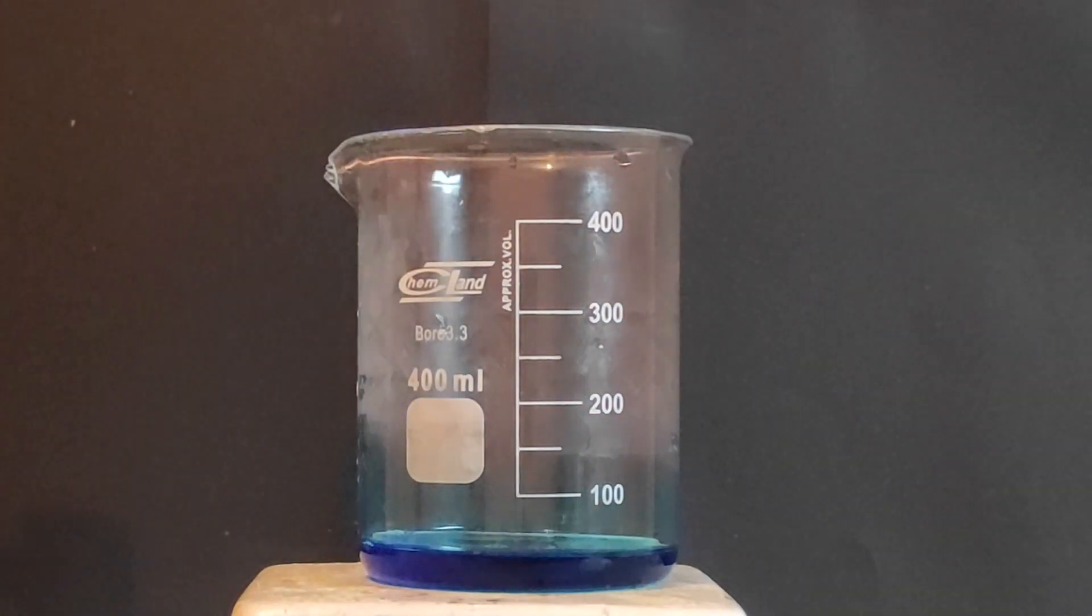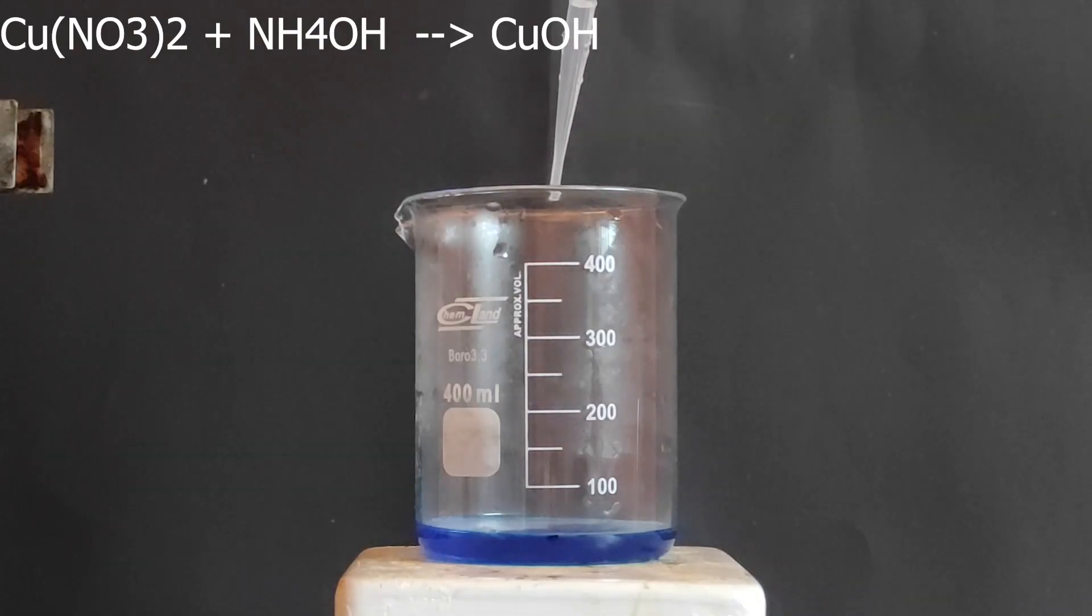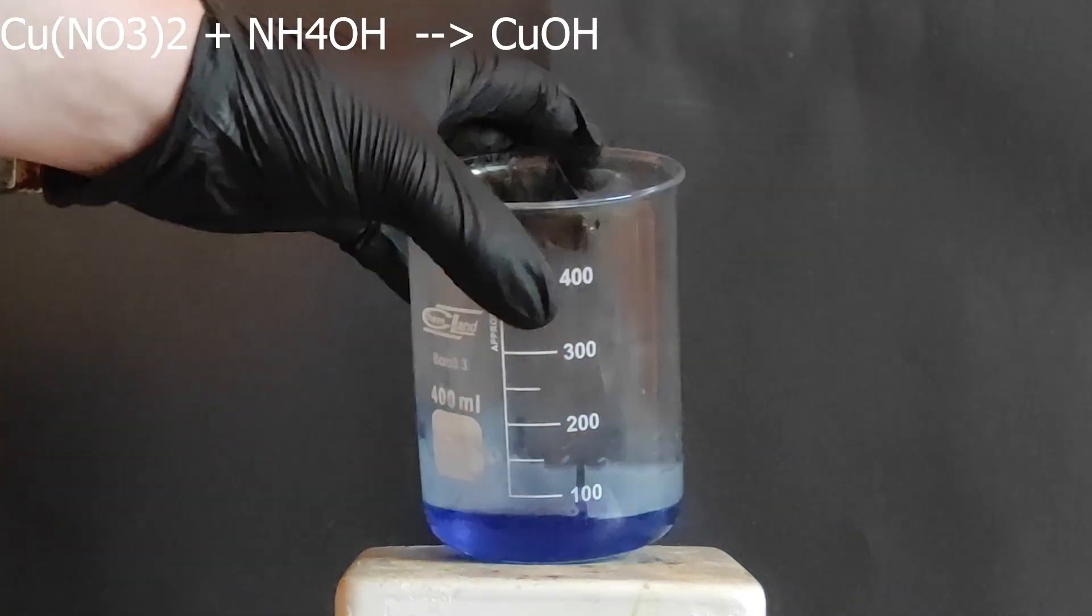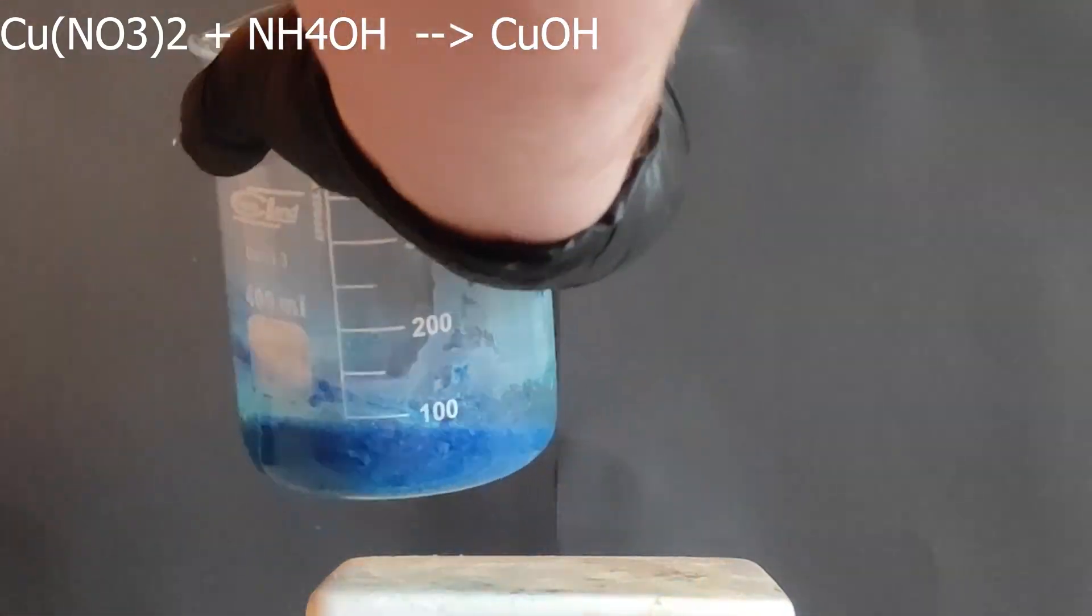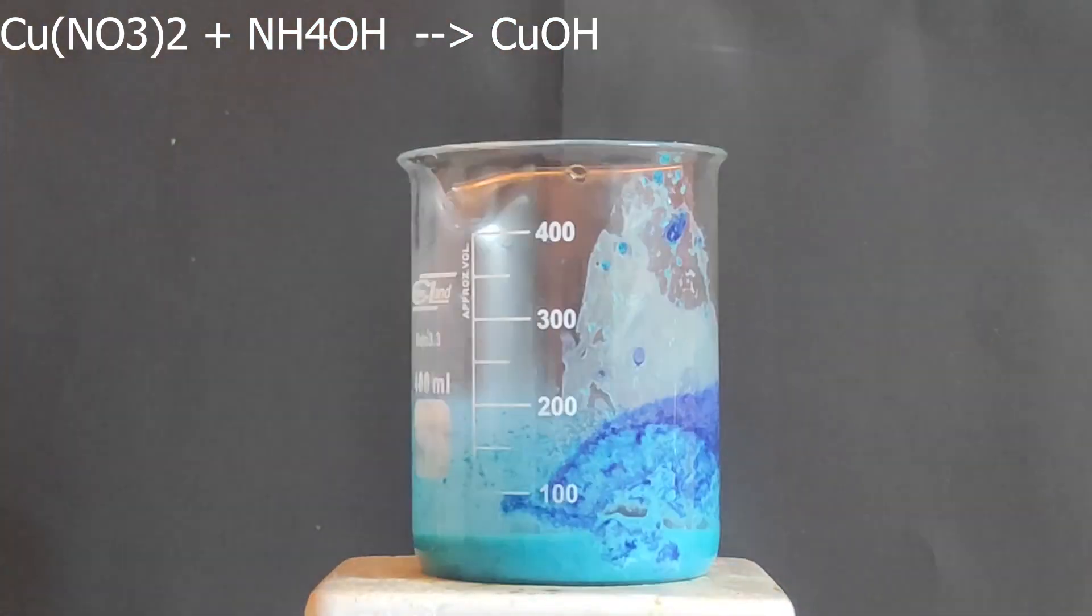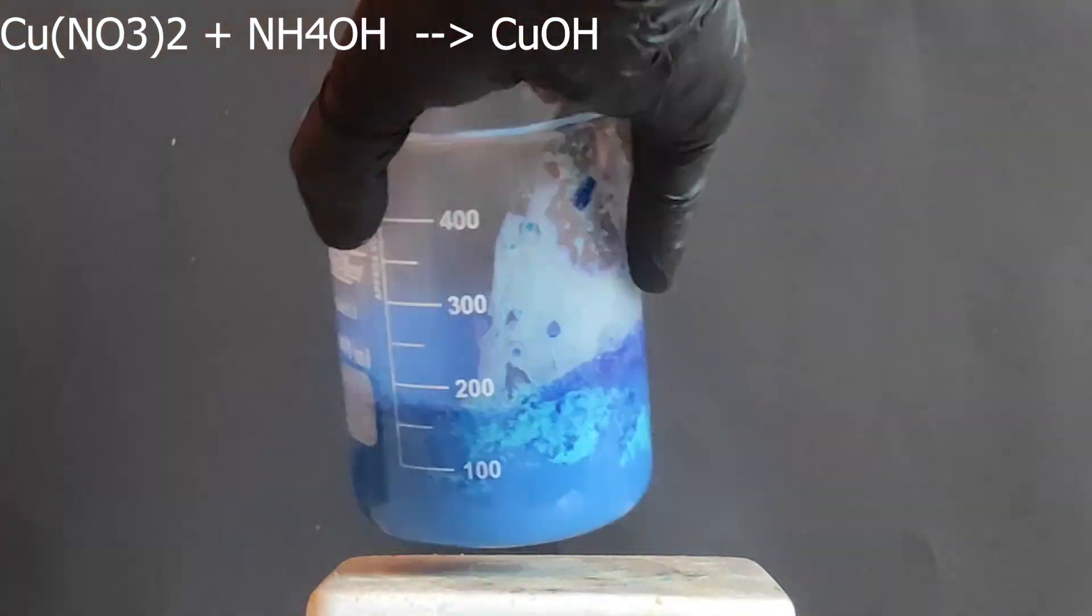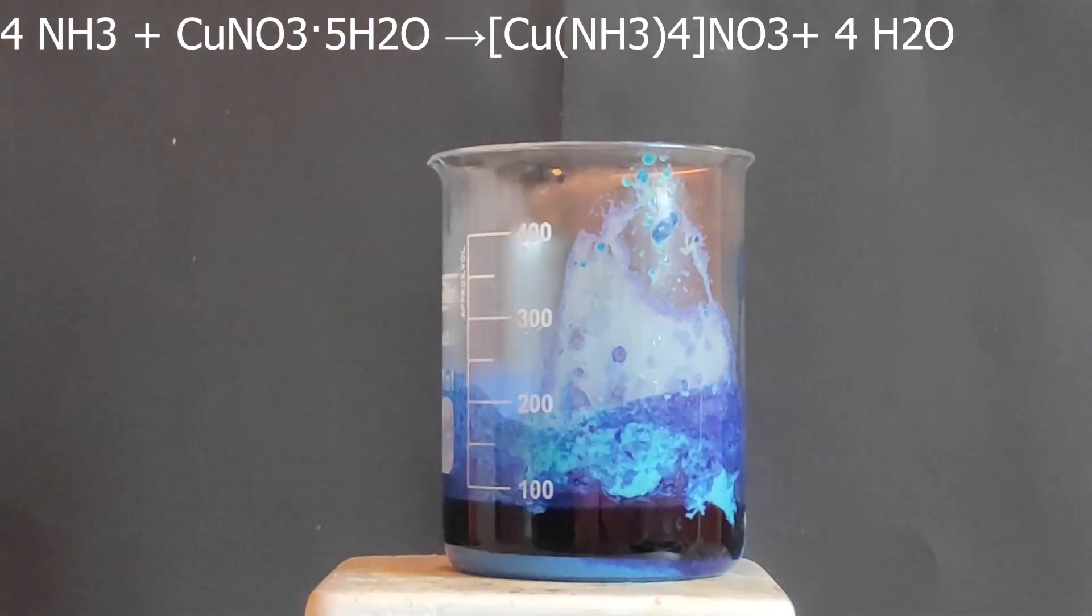So now we will be forming our explosive, which is the copper tetraamine nitrate. First I started pipetting some 20% ammonia hydroxide solution. What's happening here is by adding the ammonia hydroxide we are lowering the pH of the solution and that turns the copper nitrate into copper hydroxide. However, copper hydroxide doesn't last very long, and as we keep adding the ammonia, the copper hydroxide will redissolve and that will form our explosive.